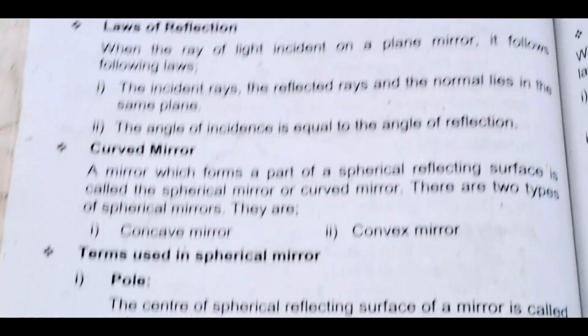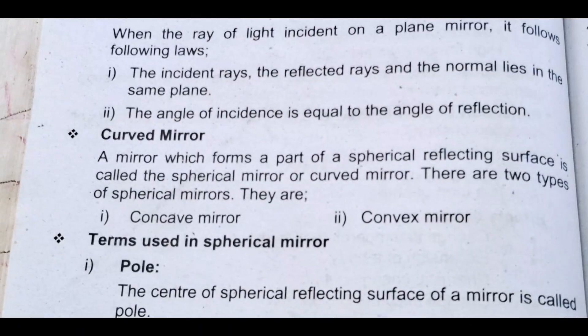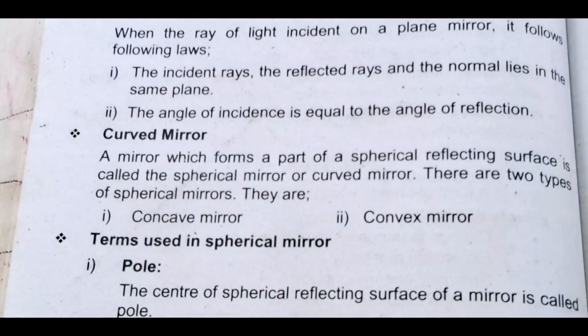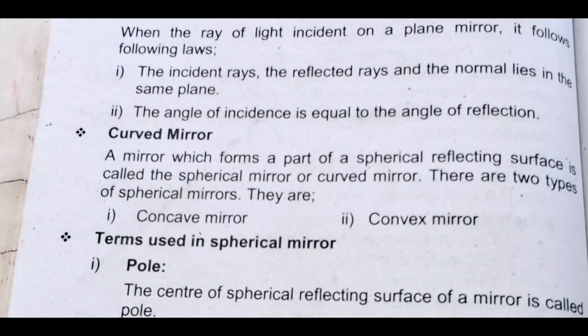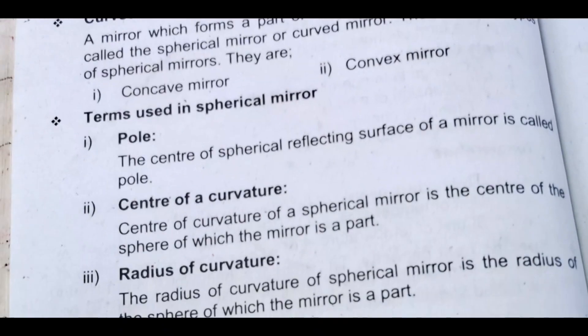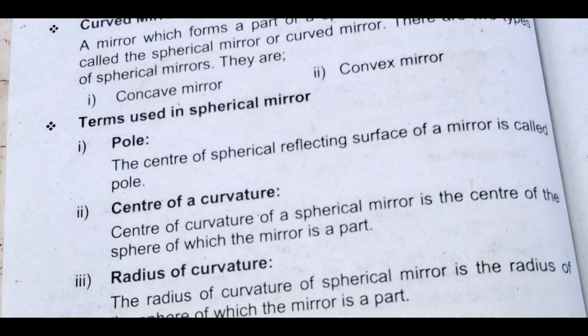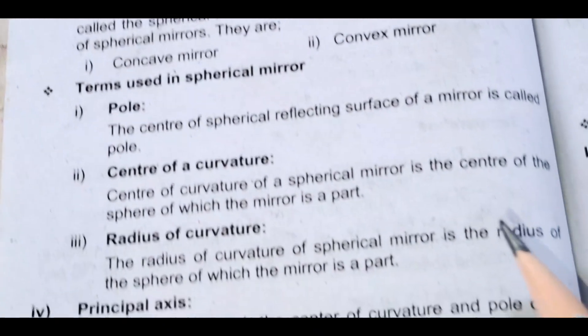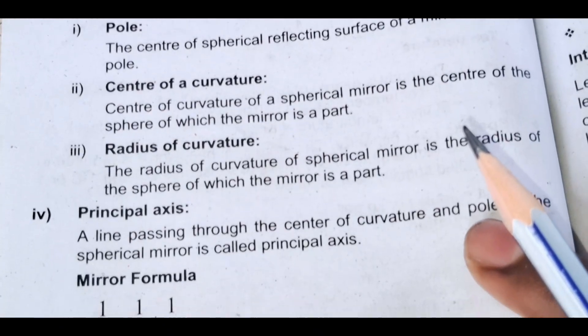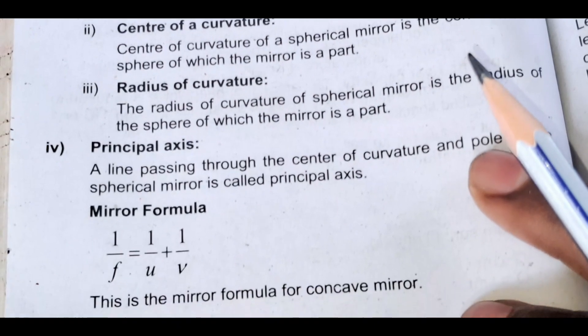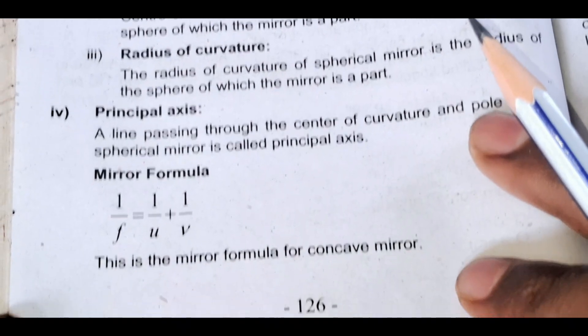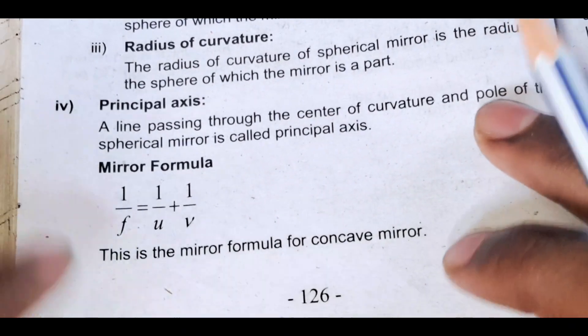Terms used in spherical mirrors: pole, center of curvature, radius of curvature, principal axis, mirror formula.